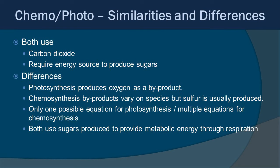Let's go through some differences and similarities between chemosynthesis and photosynthesis. Both use carbon dioxide and both require energy sources to produce sugars. Differences: photosynthesis produces oxygen as a byproduct, while chemosynthesis produces byproducts that vary by species, but sulfur is usually produced. There is only one possible equation for photosynthesis, whereas there are multiple equations for chemosynthesis. Both use the sugar produced to provide metabolic energy through respiration.